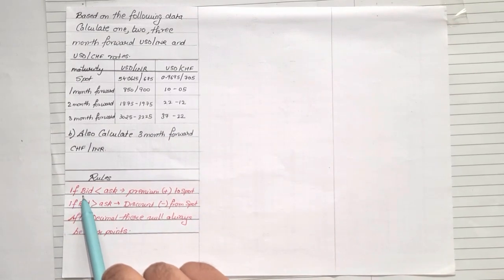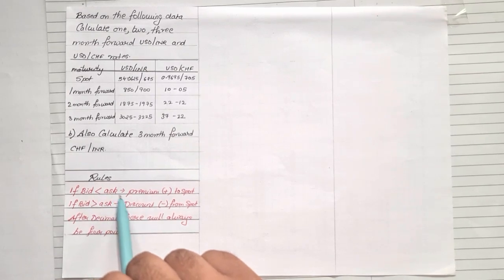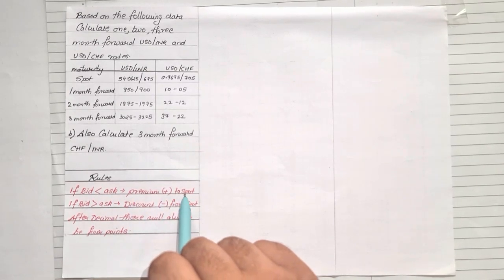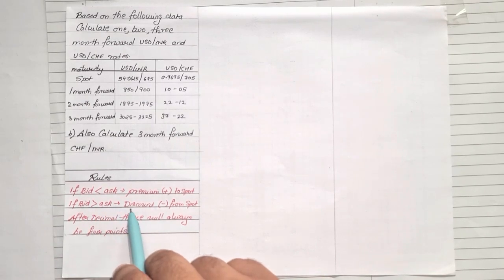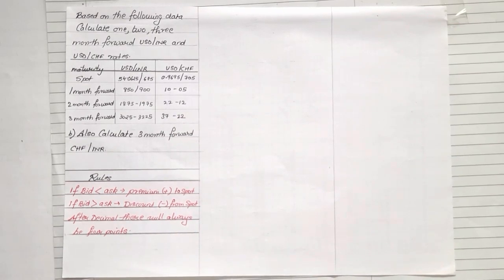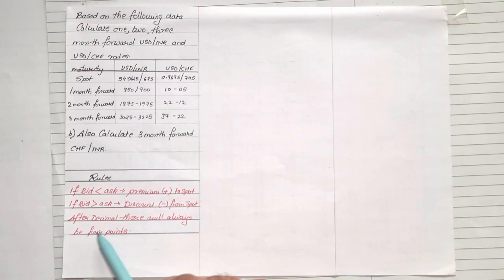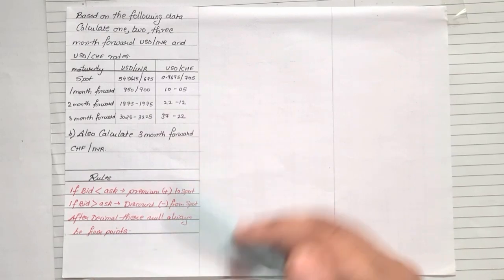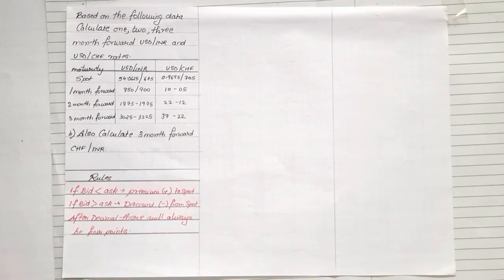In order to find the forward rates, you only have to remember these two rules. Number one: if bid is less than the ask, then the premium gets added to the spot rate. And if the bid is more than the ask, then discount will get subtracted from the spot rate. Those are the only two points which you need to know. And lastly, after decimal there will always be four points — it will always be four decimal places.